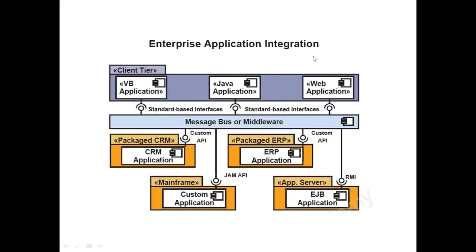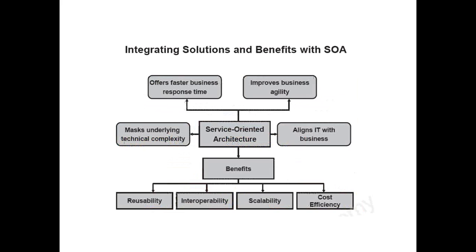Enterprise application integrations used a middleware approach, which was pretty good compared to point-to-point. But still it was not that great — that's why the concept of SOA came. Again, SOA is a middleware, but it's not point-to-point — it has a lot of other capabilities. So what are the benefits? Reusable: it is based on services, and all the services are reusable. These are the benefits that organizations today look for when moving towards SOA.